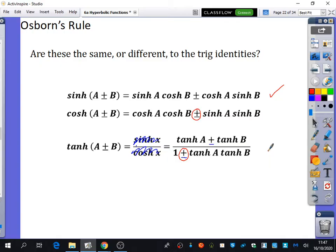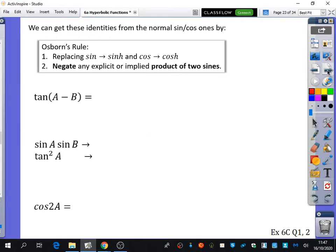And so Osborn's rule allows us to go from any of the trigonometric identities that we have, and it's going to be a shortcut that will help us translate from trigonometric to hyperbolic.